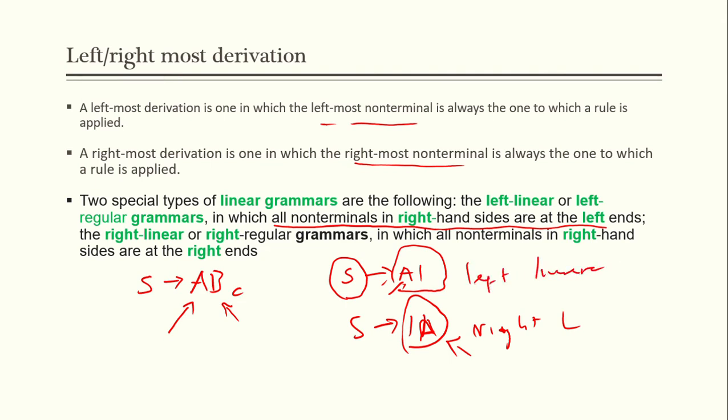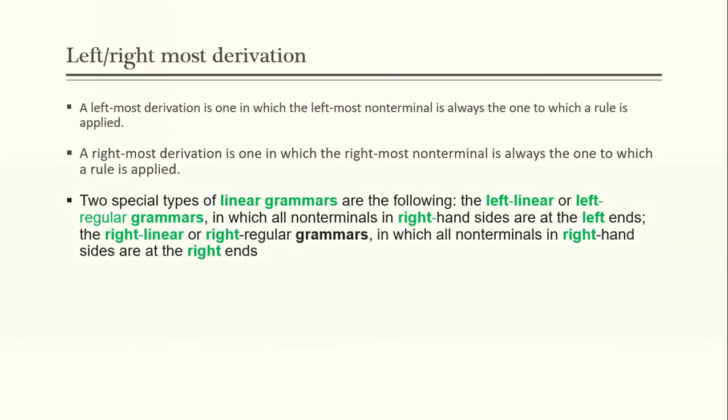That covers left-most and right-most derivations and the terminology around context-free grammar and BNF. You need to understand these terms because some exam questions will ask you to write a grammar for a right-linear or left-linear form, or to derive a grammar using left or right derivation — so you must know the difference.